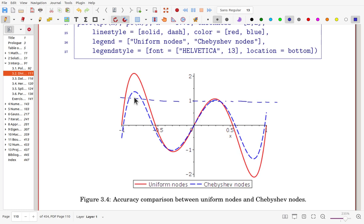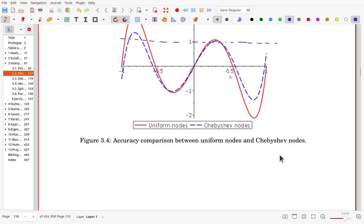So it becomes better. Yet we have some error, however, we can get better interpolation, interpolating polynomial, by using Chebyshev nodes.